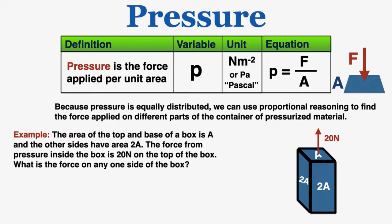An example here says the area of the top and base of a box is A and the other sides have area 2A. The force from pressure inside the box is 20 newtons on the top of the box. What is the force on any one side of the box?